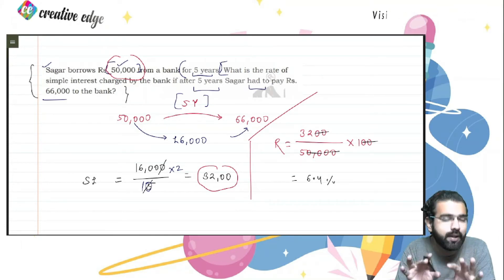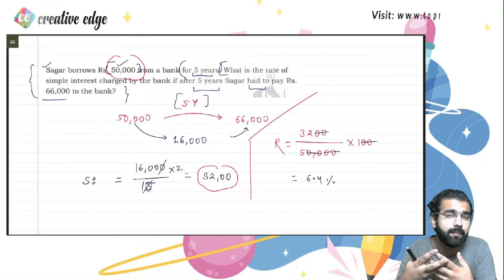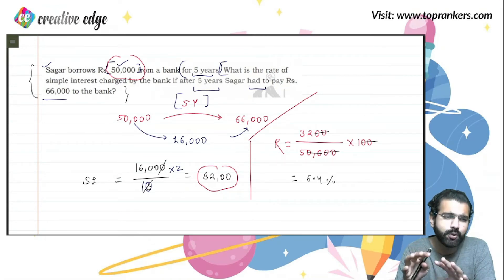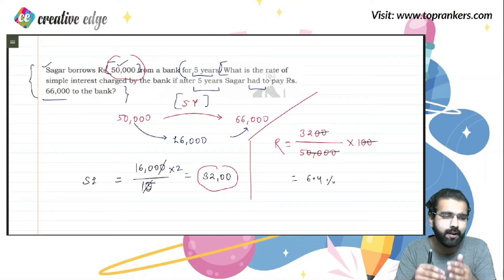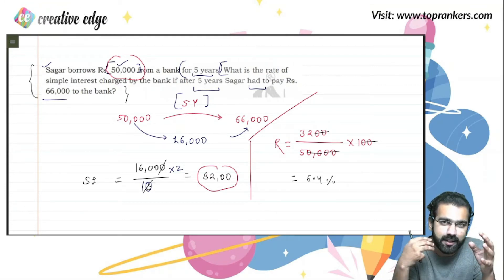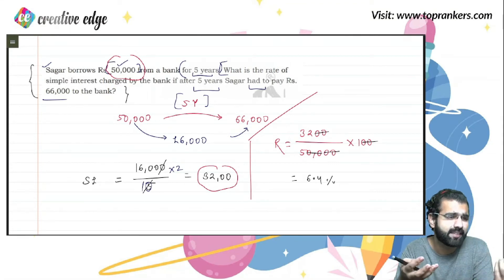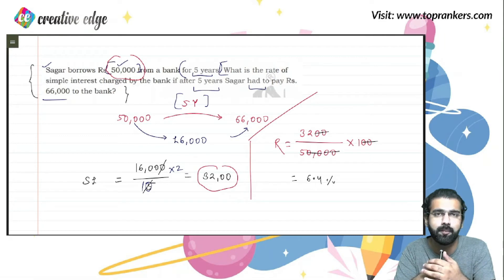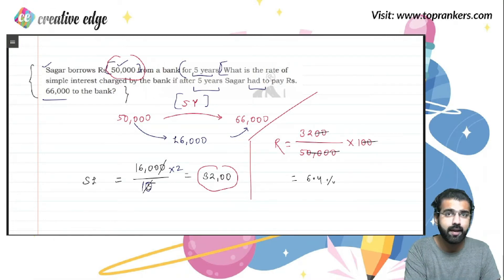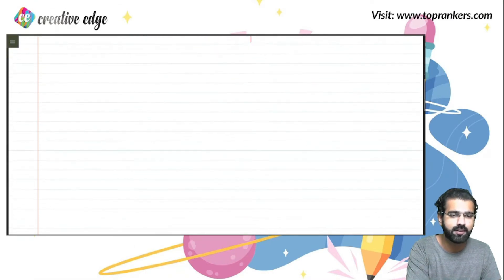I understand you could have done this more simply using the basic formula. I just wanted to teach you the functionality of simple interest — how these things are calculated, how they behave, and what is the nature and application of the values: principal, rate, and time. That's why I did it differently, to make you understand the basic functionality of simple interest. If this concept is making sense, let's try another question.